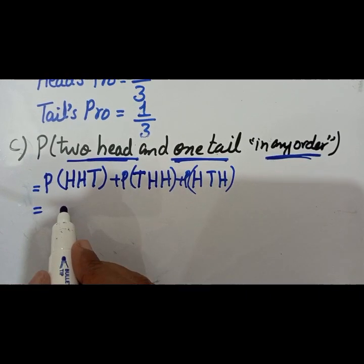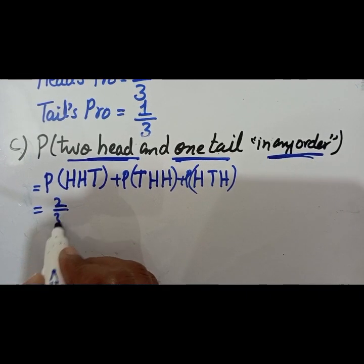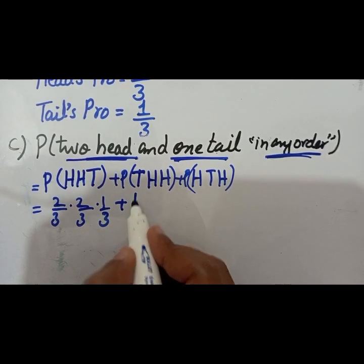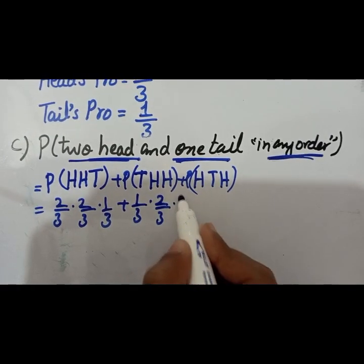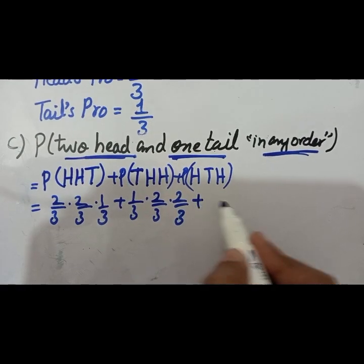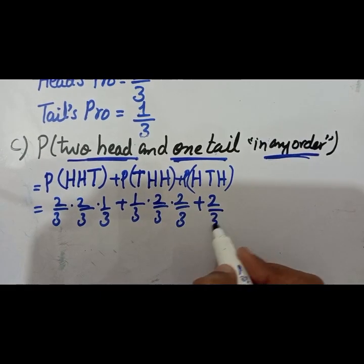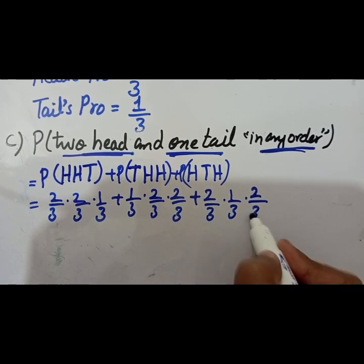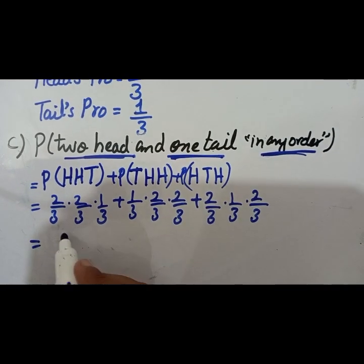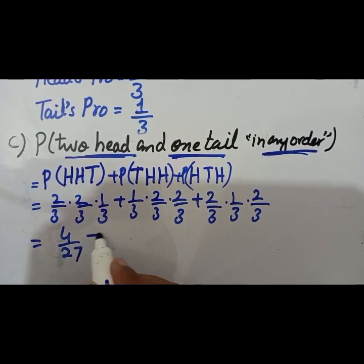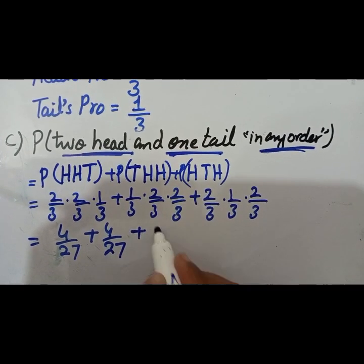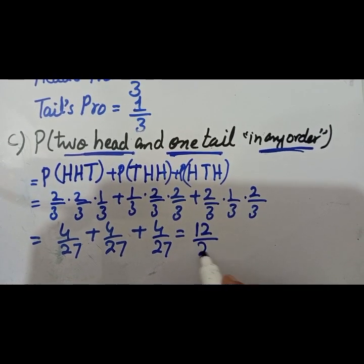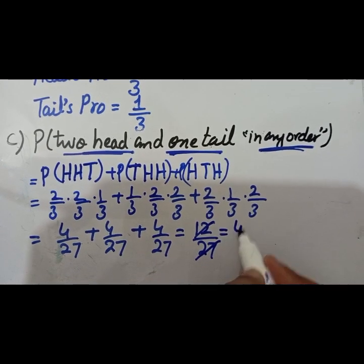The probability of head-head-tail is 2/3 × 2/3 × 1/3. The probability of tail-head-head is 1/3 × 2/3 × 2/3. The probability of head-tail-head is 2/3 × 1/3 × 2/3. Each combination gives 4 by 27. Adding them: 4/27 + 4/27 + 4/27 = 12 by 27, which simplifies to 4 by 9.